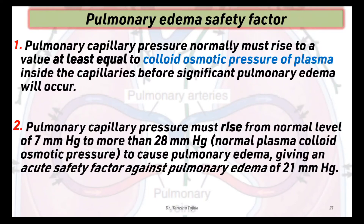What is the safety factor against pulmonary edema? Pulmonary capillary pressure normally must rise to a value at least equal to the colloid osmotic pressure of plasma inside the capillaries before significant pulmonary edema occurs. Pulmonary capillary pressure must rise from its normal level of 7 mmHg to more than 28 mmHg, which is the normal colloid osmotic pressure. Therefore, the acute safety factor against pulmonary edema is 21 mmHg.